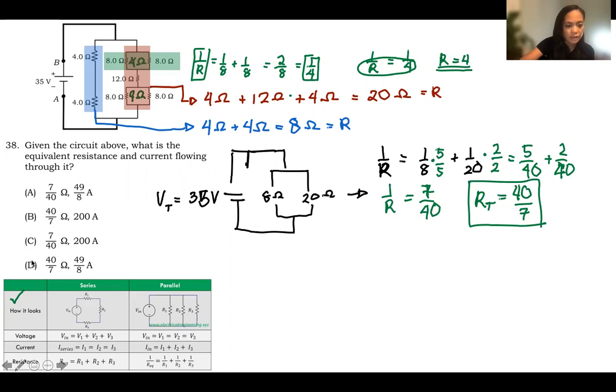Now, in our choices, this is not an answer. Our R should have these values in ohms. Now, let's go for the current.